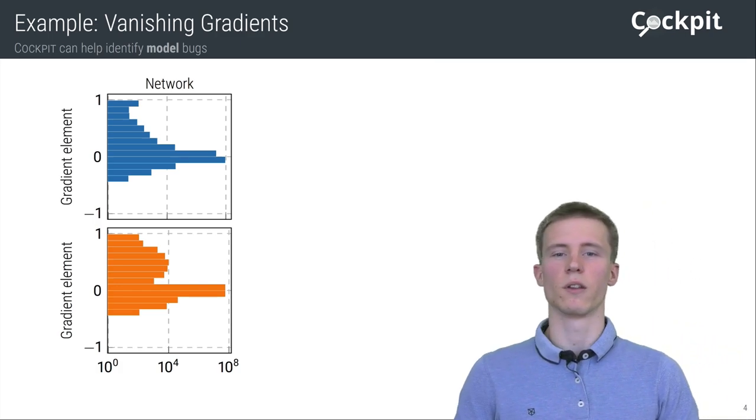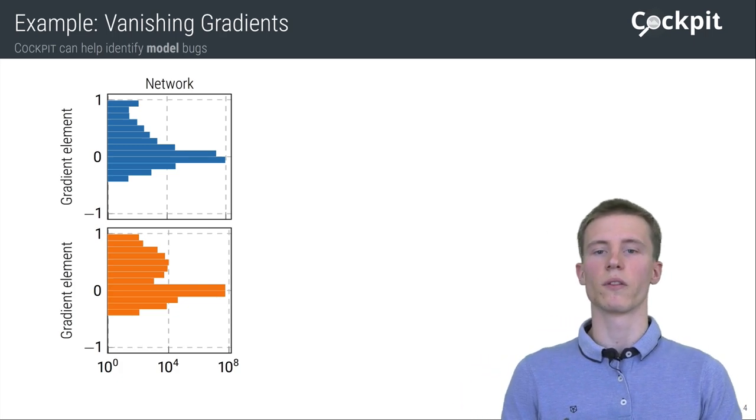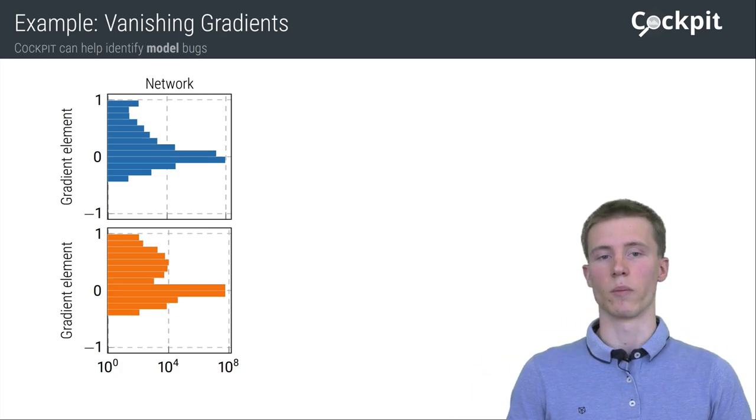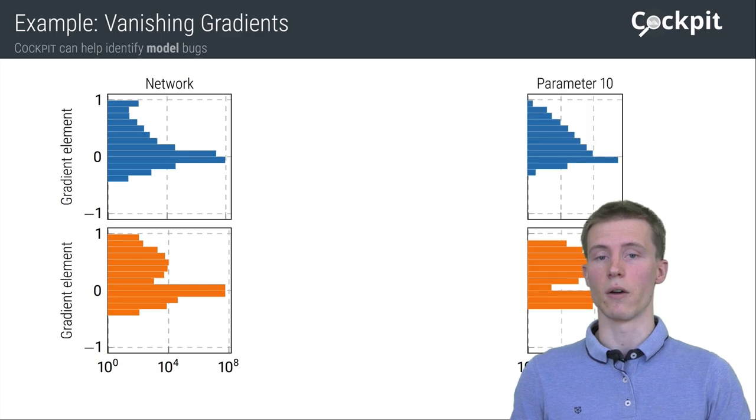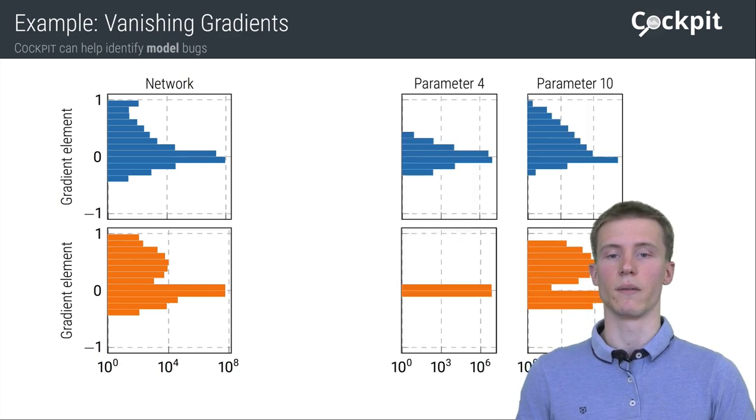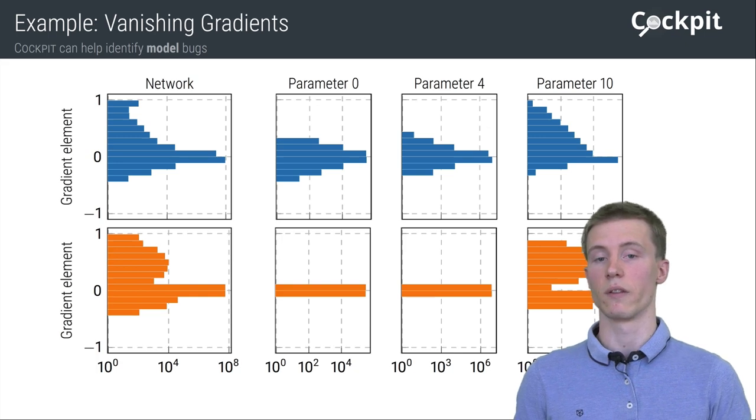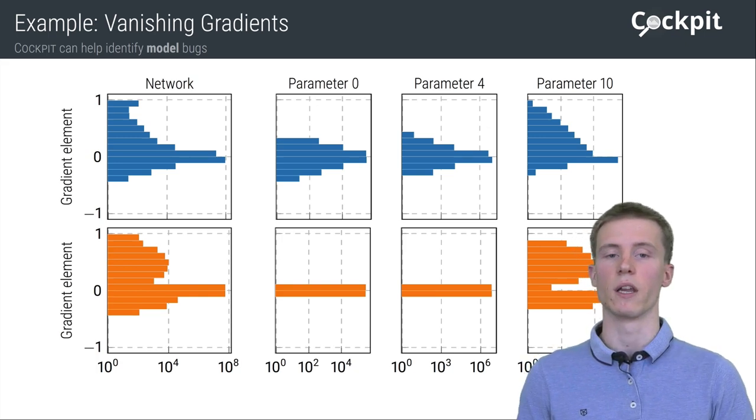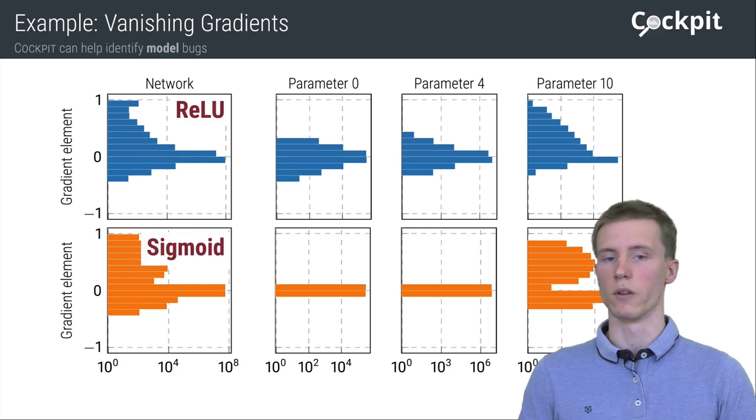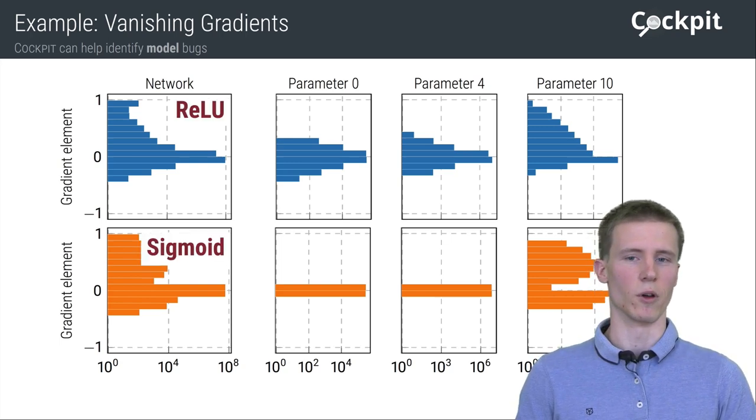And in fact, we can only see the difference when we take one step further and inspect the gradients per layer. And now we can clearly see that the orange network's gradients die and thus those layers close to the input train slowly. And that's because the blue network uses ReLU while the orange one has sigmoids.